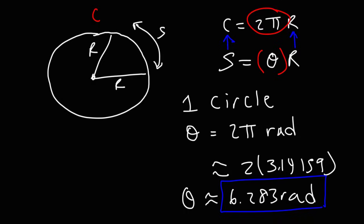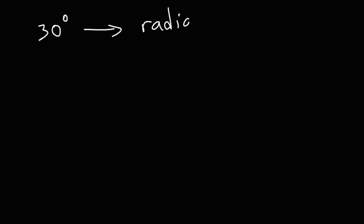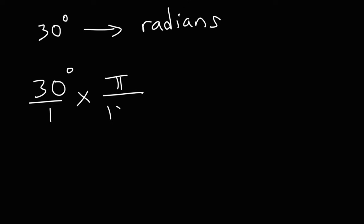There's one more thing we need to talk about: the ability to convert from radians to degrees and degrees to radians. So let's say if you have an angle measure of 30 degrees — how do you convert that to radians? Feel free to pause the video if you want to try this. To convert degrees into radians, multiply the angle in degrees by pi divided by 180.